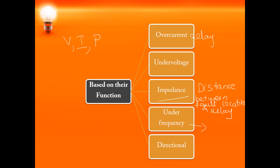Under frequency relay operates if the frequency goes below the standard level. Directional relay is mainly used to protect transmission lines — you will have two CTs, one at the entering end and another one at the exit of the transmission line. The current entering should equal the current exiting. Directional relays can detect the fault whether in the forward direction or the reverse direction.